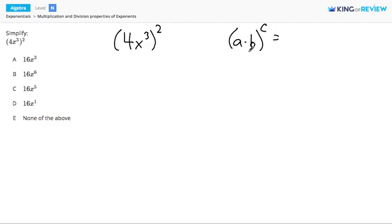a times b, all raised to the power c, what we do to get rid of the parentheses is distribute the exponent to all the pieces that are multiplied inside the parentheses. So this would become a to the c times b to the c.